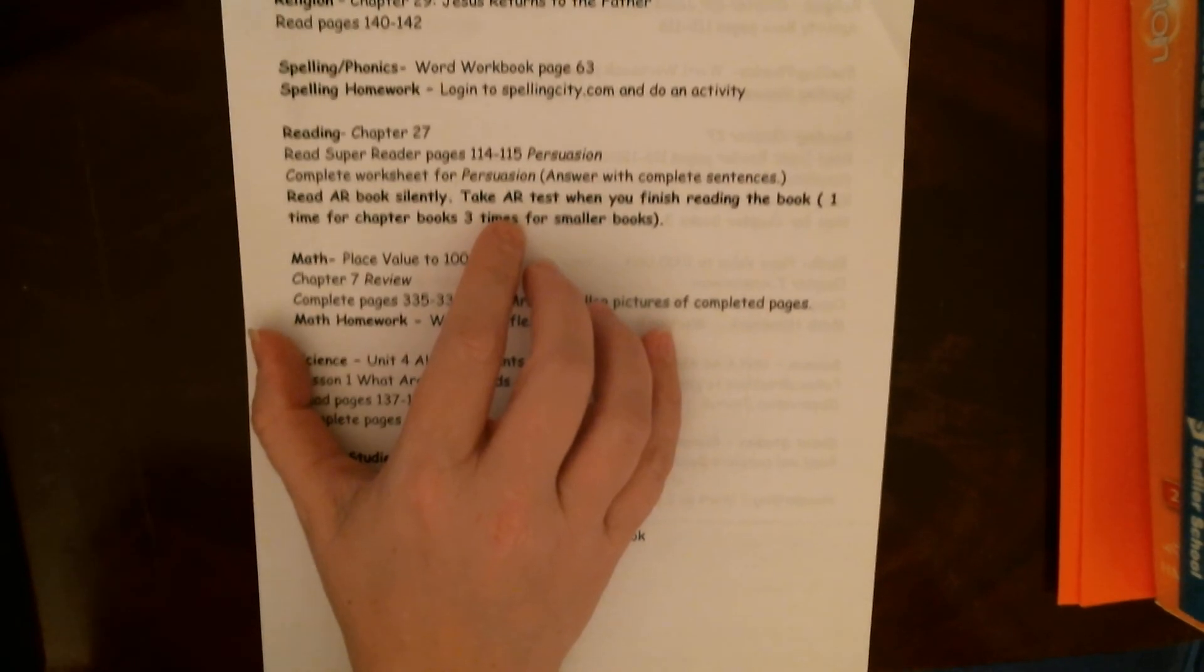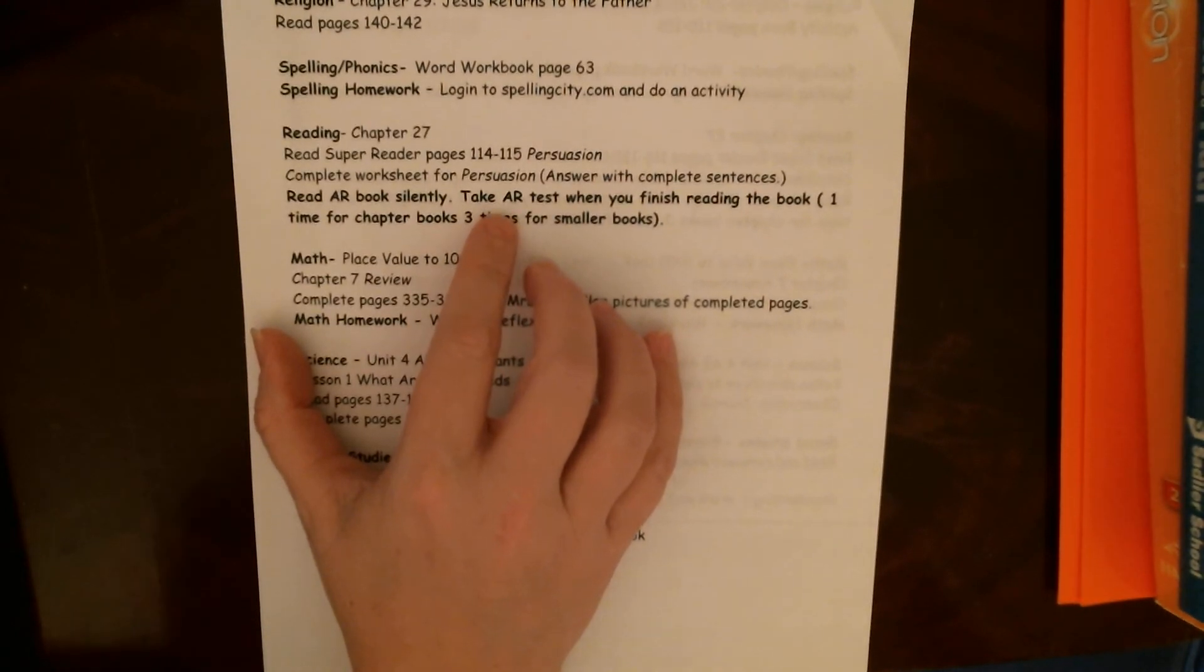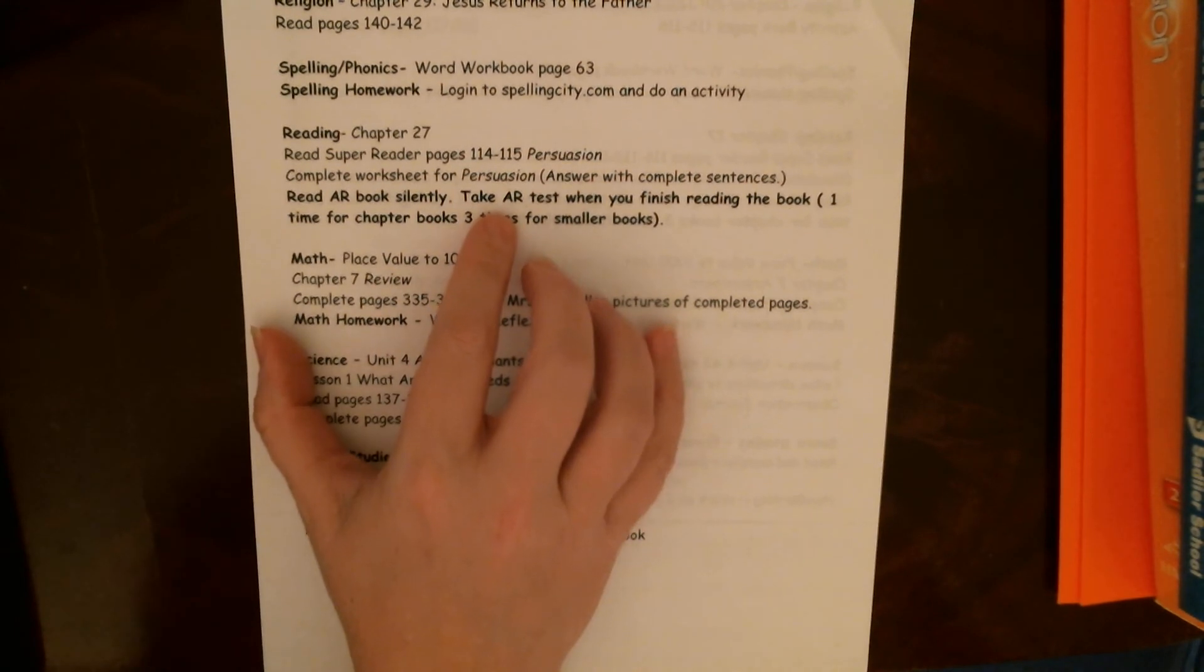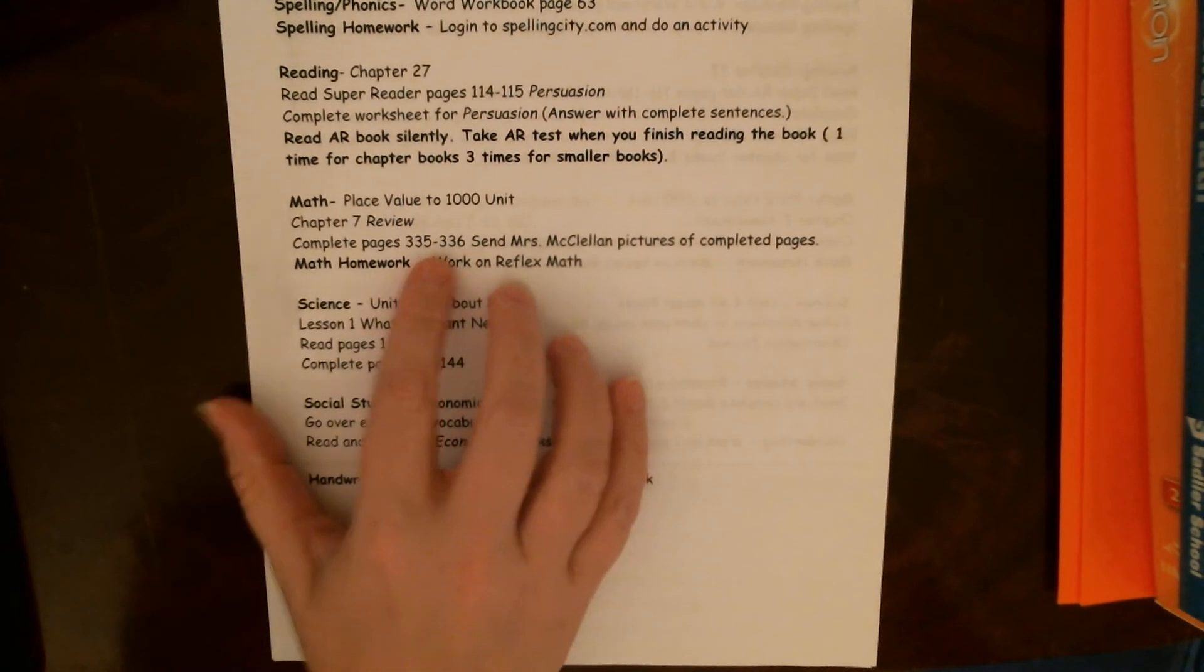And you need to have three book study books and at least three other books that you've read, depending if it's a chapter book. But if it's shorter books, you should have read at least three others. You need to make at least 50% of your goals. So log into AR and make sure that you are doing that. I already have a couple kids who've made 100% of their goals. I'm super proud of them.